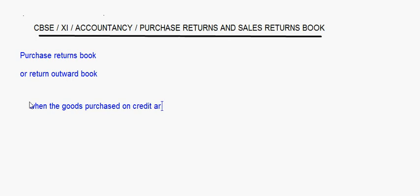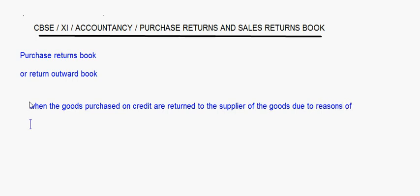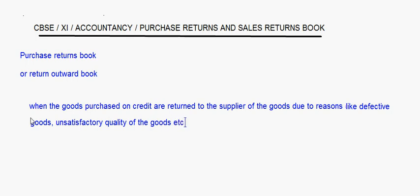When goods purchased on credit are returned to the seller or supplier due to reasons like defective goods or unsatisfactory quality of the goods, these are recorded in the purchase return books.